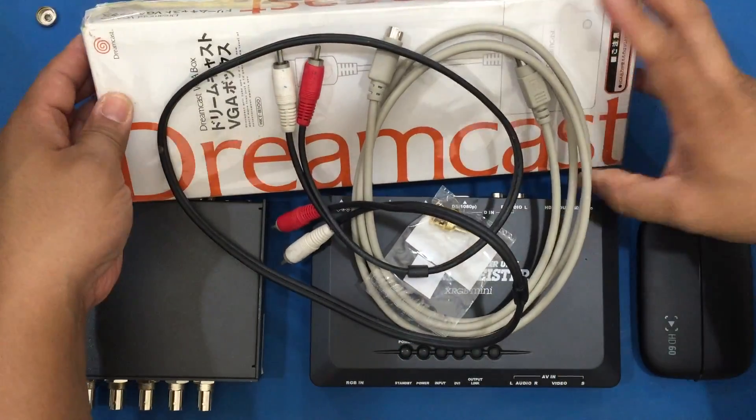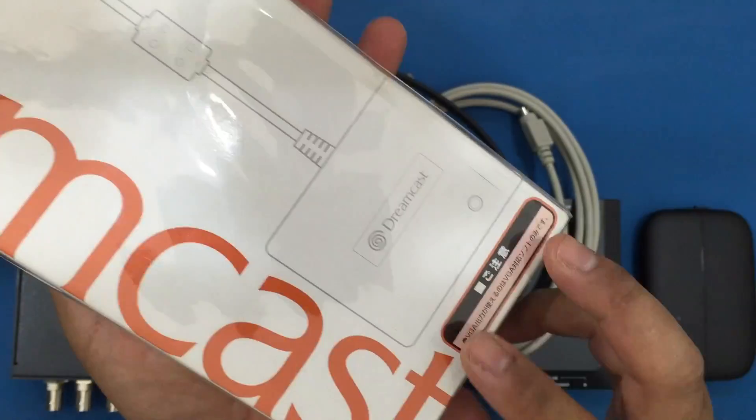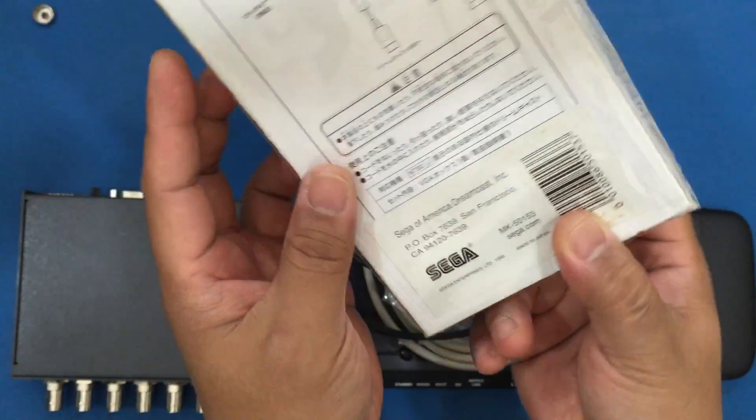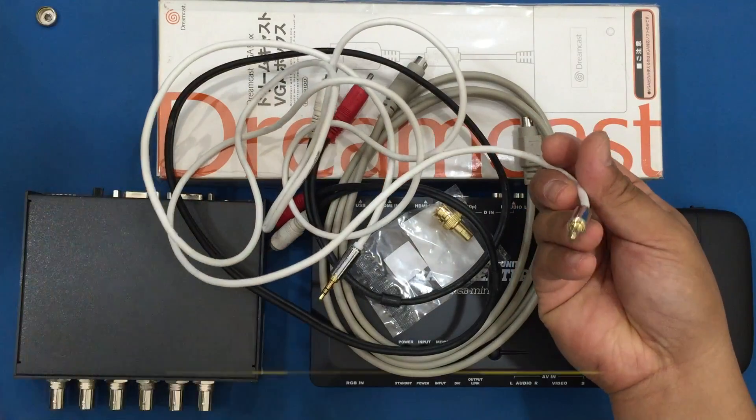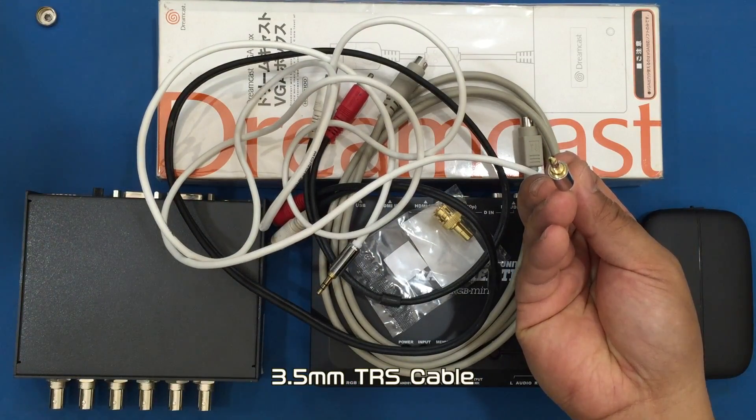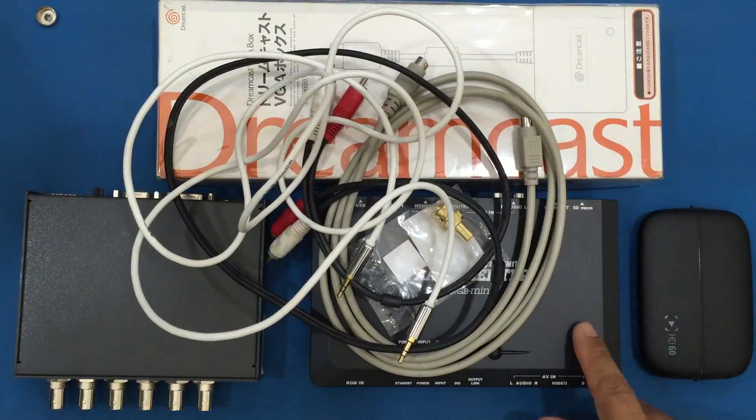Also a VGA box and the interesting thing about this VGA box is that this is actually the American version. The only thing different from this and the Japanese version is this sticker right here and lastly a 3.5 millimeter TRS cable to get audio from the VGA box over to the Framemeister.